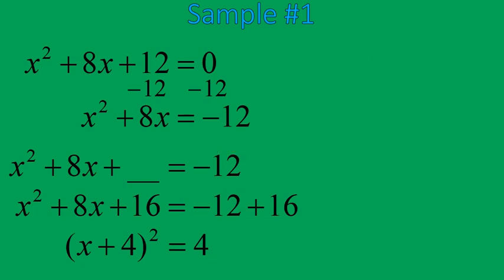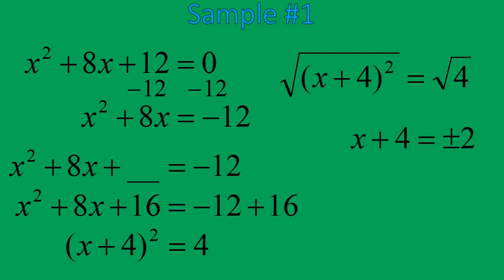Now let's show how to finish this off. You'll take the square root of both sides of this equation, leaving you with x plus 4 on the left, and the square root of 4, which gives you plus or minus 2. The biggest area of making mistakes is forgetting that the square root of 4 is plus or minus 2. So write two equations: x plus 4 equals positive 2, and x plus 4 equals negative 2. Subtract 4 from both sides to get x equals negative 2, and x equals negative 6. That's the solution.